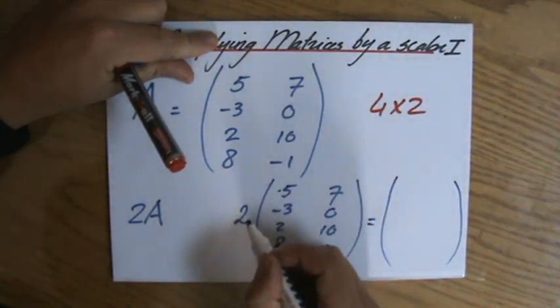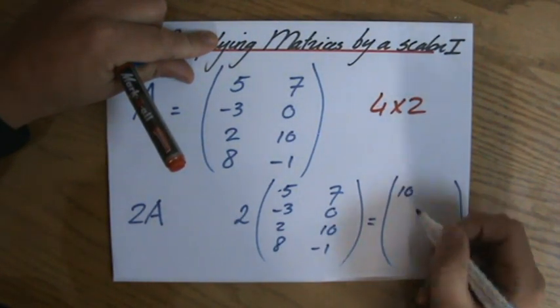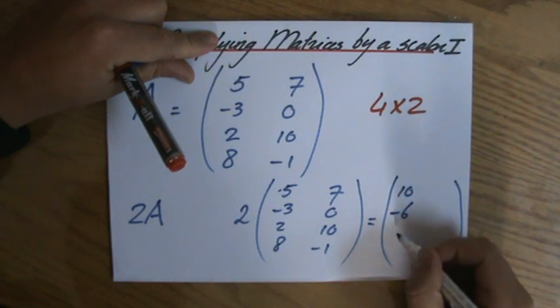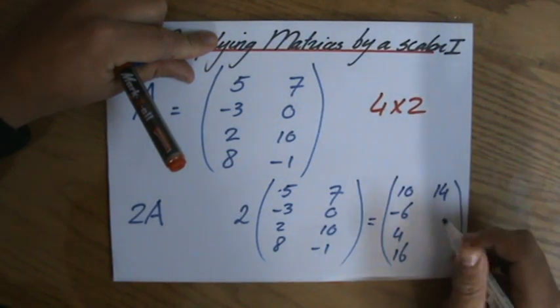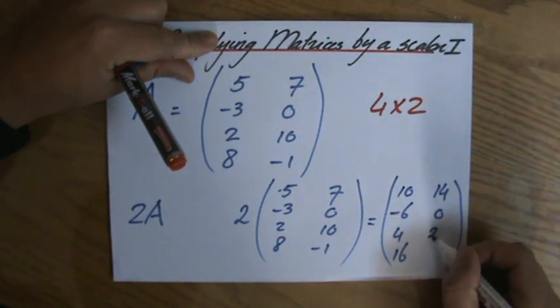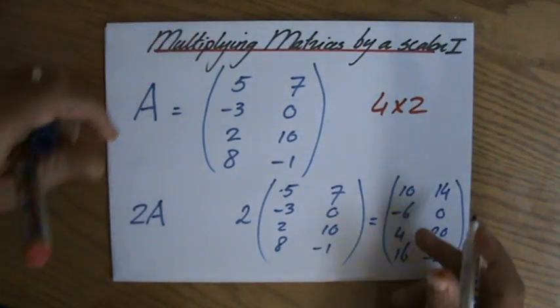I multiply each position by 2 so 10, minus 6, 4, 16, 14, 0, 20, minus 2. So that would be the answer.